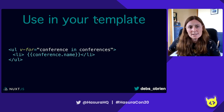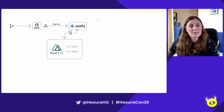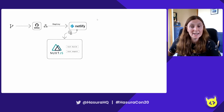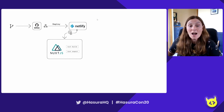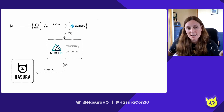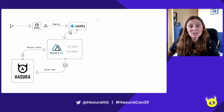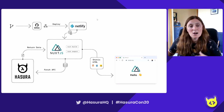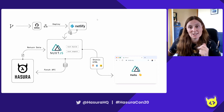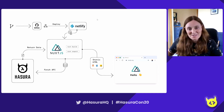So let me show you how that works. We have our application, we've done a git push, it's deployed on Netlify. Nuxt calls nuxt build and nuxt export, fetches from the Hasura API, which returns data back into the Nuxt application. Nuxt then generates those static HTML files with all the data from Hasura, and we've got it in the browser. Pretty cool, right?